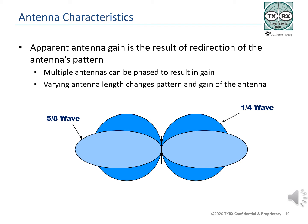Multiple antennas, phased arrays, antennas with director elements, and many other designs may be directional. Some antennas, such as panel antennas used in cellular systems, show gain in the direction they face. Slotted and panel antennas used in these systems typically have a narrow signal beam. The patterns here show that varying the length of the antenna may also result in gain, using a five-eighths wavelength antenna and comparing it to a quarter-wavelength antenna.